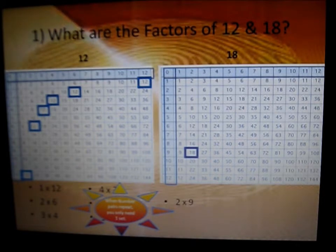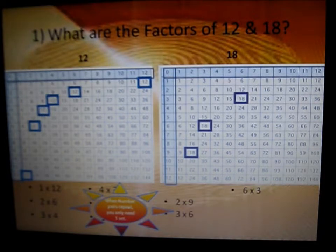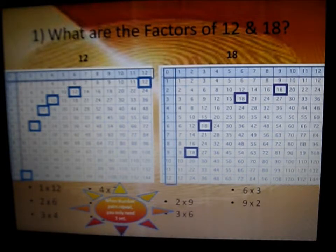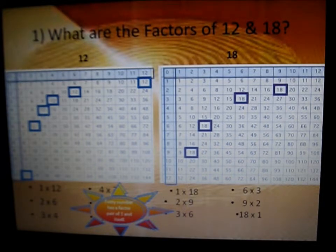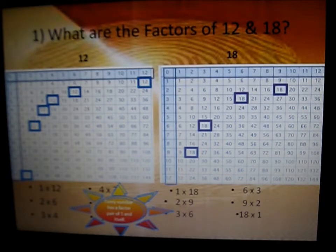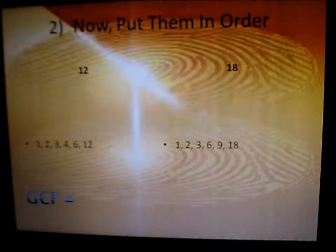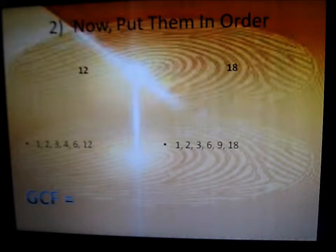Now for 18: 2 times 9 is 18, 3 times 6 is 18, 6 times 3 is 18, and 9 times 2 is 18. Every number has the pair of 1 and itself, so 1 times 18 is 18. Remember, you only need one set. The factors of 18 in order are: 1, 2, 3, 6, 9, and 18.